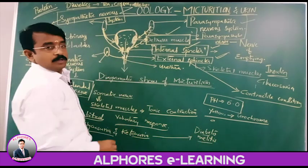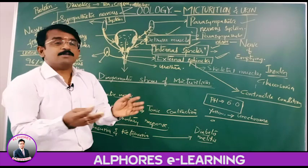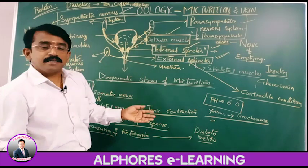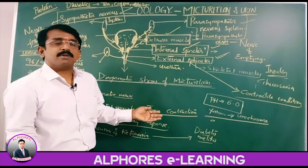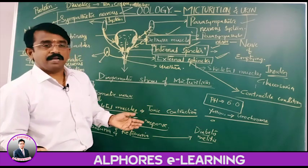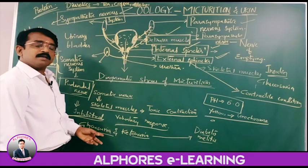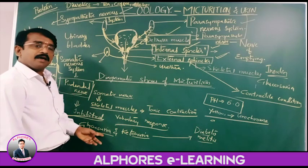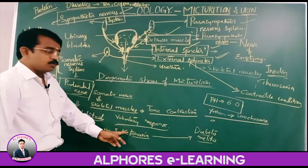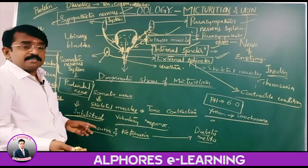Ketonuria and glycosuria are the indicators of diabetes mellitus. Mellitus refers to sweet — as more glucose levels are increased, that is nothing but diabetes mellitus.